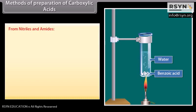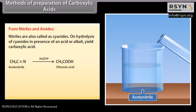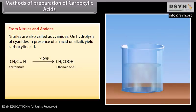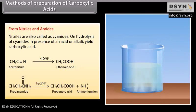From nitriles and amides: nitriles are also called cyanides. On hydrolysis of cyanides in the presence of an acid or alkali, they yield carboxylic acids. Hydrolysis of acetonitrile in the presence of an acid forms ethanoic acid. On hydrolysis of propanamide in the presence of an acid, it forms propanoic acid and ammonium ion.